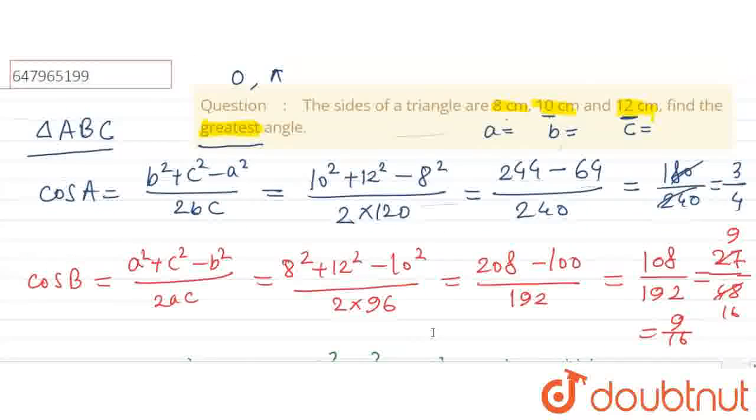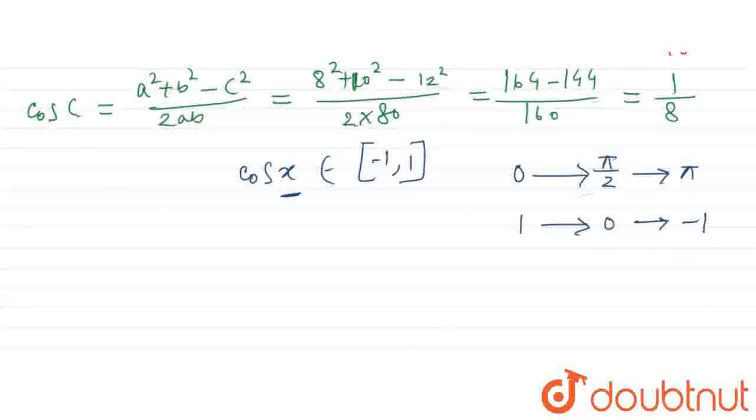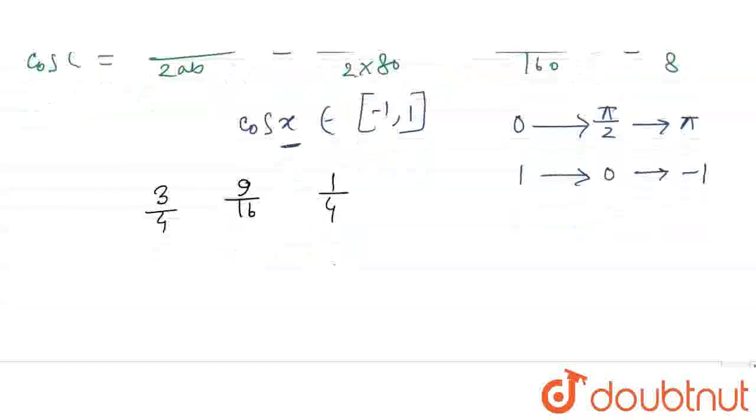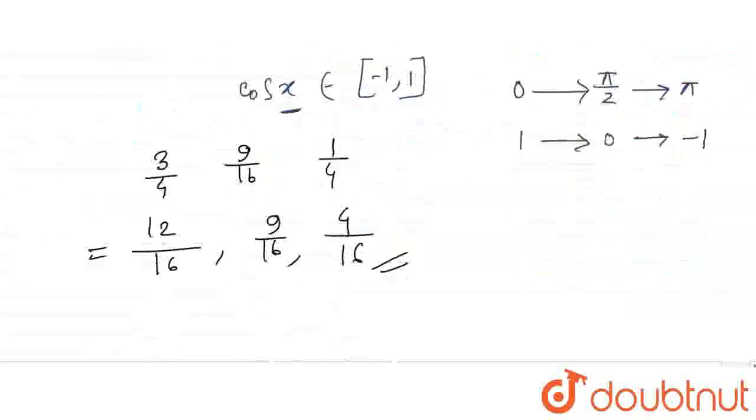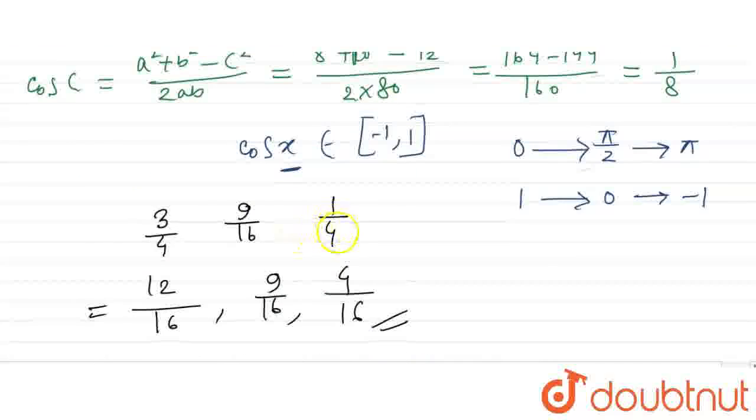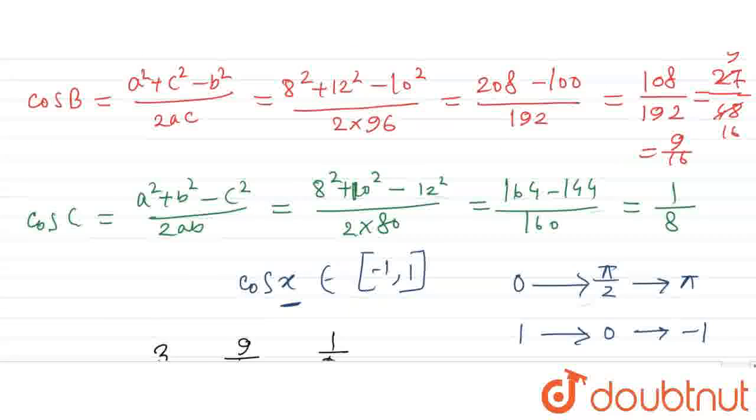So we can see the three values: 3 by 4, 9 by 16 and 1 by 8. Let's check which value is smallest. Converting to common denominator 16: 3 by 4 is 12 by 16, 9 by 16, and 1 by 8 is 2 by 16. Now if you can see, the smallest value is 2 by 16, which is 1 by 8. So this is the value of cos C. This is the smallest cosine value, so this is the greatest angle.